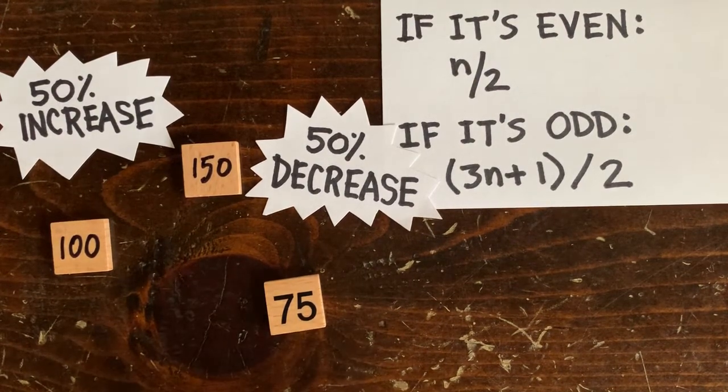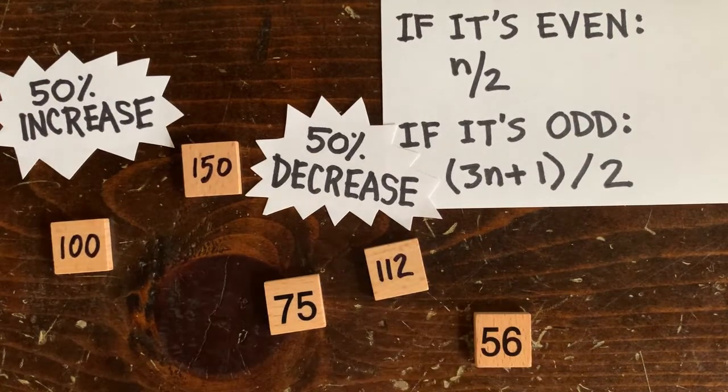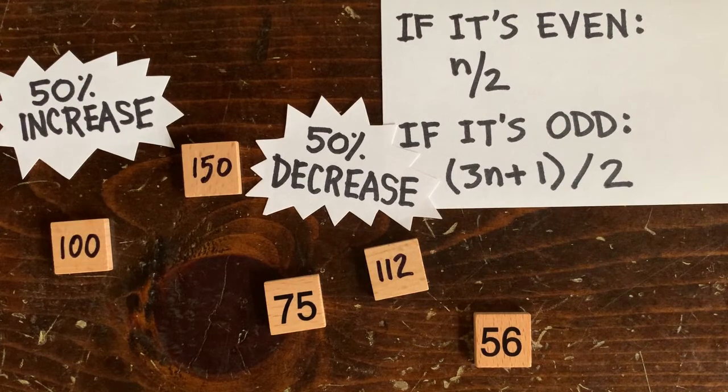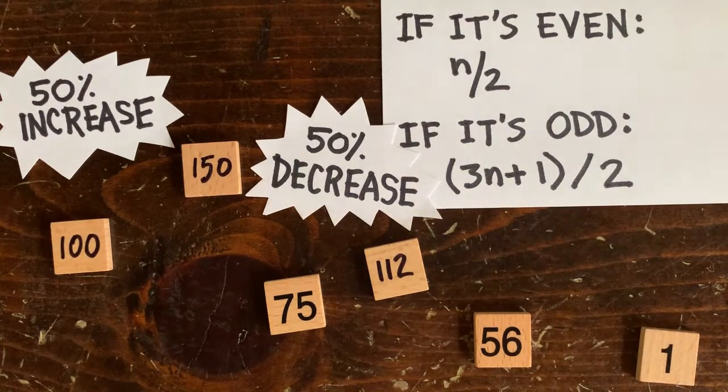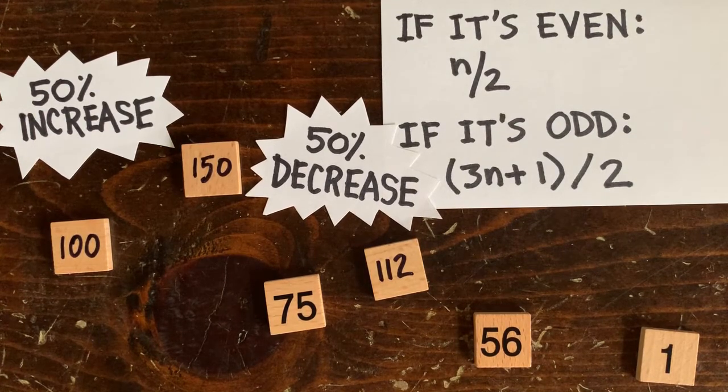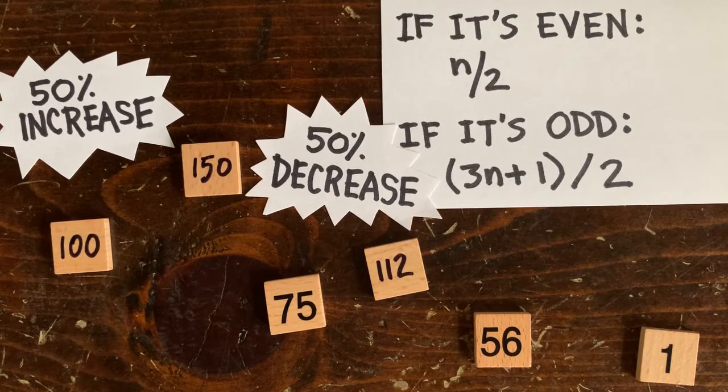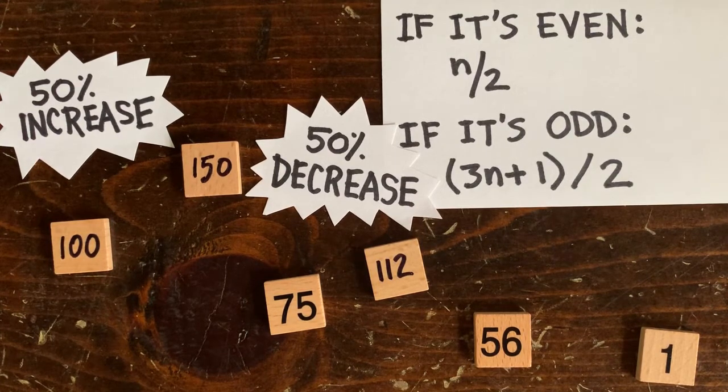And say you decide to wait some more. They increase the price again by 50% and decrease it again by 50%. Now it's about $56. And if you keep waiting, the price will eventually go to $1. And even if the plane ticket costs a million dollars to start with, the price will decrease to $1 pretty fast. And that's why 3n plus 1 trajectories tend to go down over time.